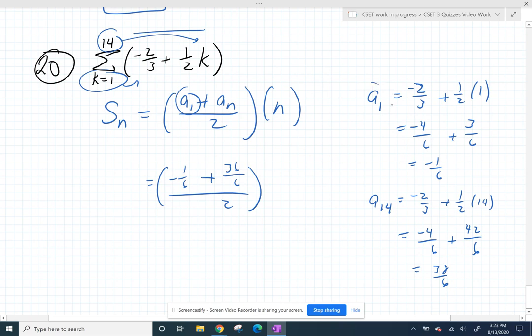So taking the average of the first term and the last term, and then multiplying it by the number of terms we have. So if we go from the first term to the fourteenth term, we do in fact have fourteen terms.